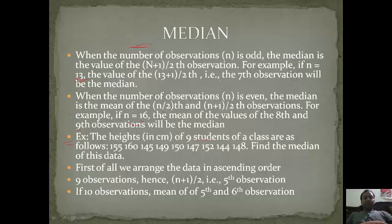Suppose there are 9 students whose height is given: 155, 160, 145, 149, 150, 147, 152, 144, 148. For finding median, first of all we arrange all these data in ascending order. So after arranging in ascending order, it becomes 144, 145, 147, 148, 149, 150, 152, 155, 160.